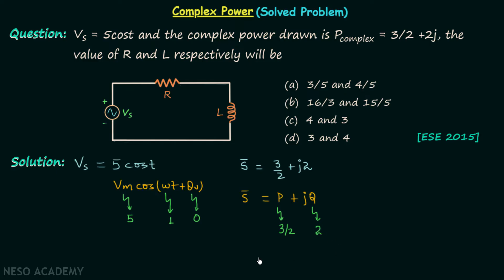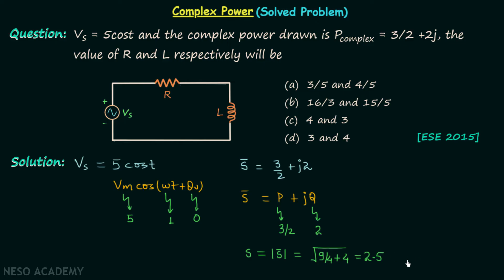The apparent power is equal to the magnitude of the complex power, so apparent power equals √(P² + Q²) = √((3/2)² + 2²) = √(9/4 + 4) = 2.5.